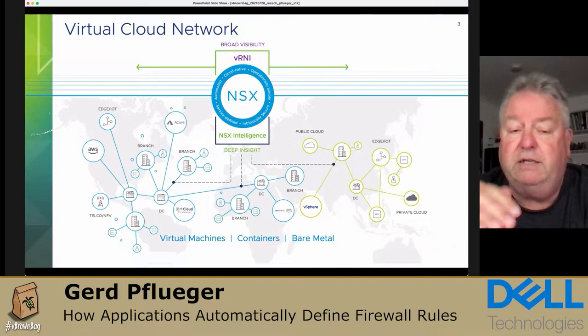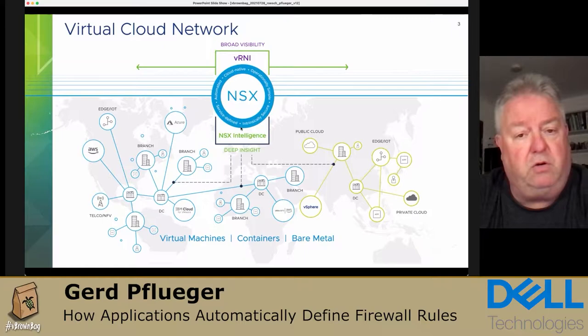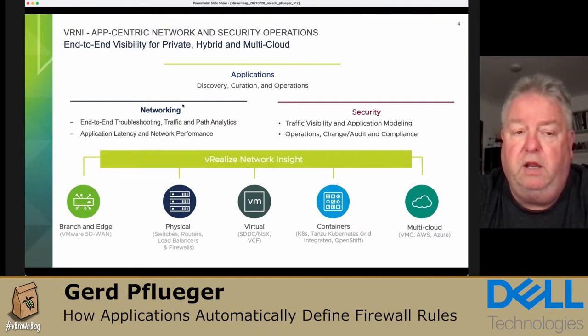And that's my tool of choice for creating application definitions and also the firewall rules. As I said, you can also do this with NSX Intelligence, so perhaps give it a try and make your own decision. vRNI — we call it vRealize Network Insight — helps with this application definition. It helps to figure out what applications you have in your network and how those applications are described.